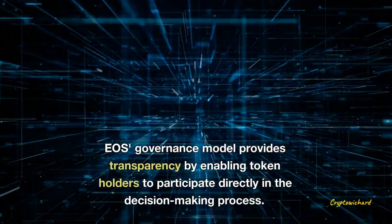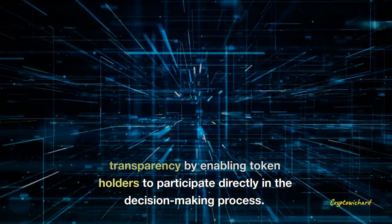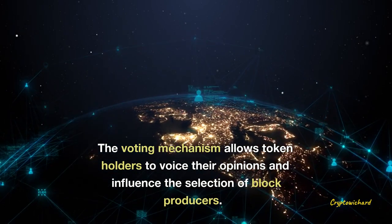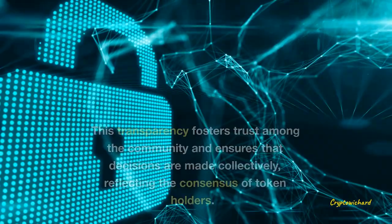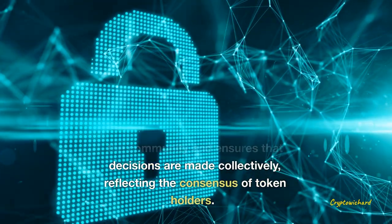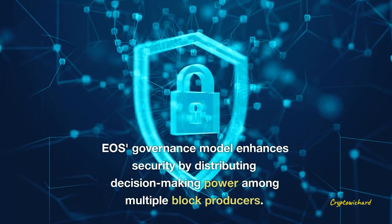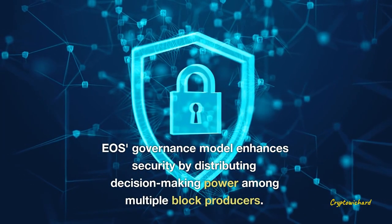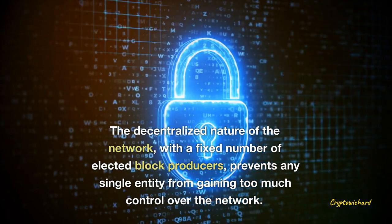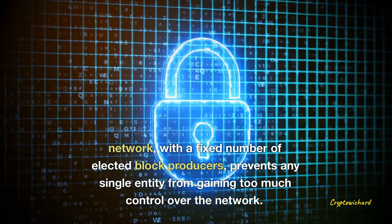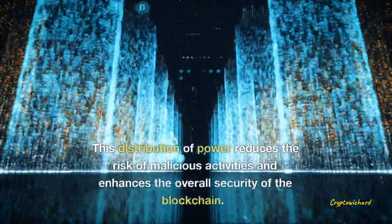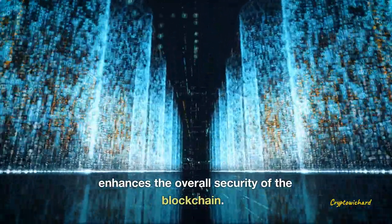EOS's governance model provides transparency by enabling token holders to participate directly in the decision-making process. The voting mechanism allows token holders to voice their opinions and influence the selection of block producers. This transparency fosters trust among the community and ensures that decisions are made collectively, reflecting the consensus of token holders. EOS's governance model also enhances security by distributing decision-making power among multiple block producers. The decentralized nature of the network, with a fixed number of elected block producers, prevents any single entity from gaining too much control, reducing the risk of malicious activities.